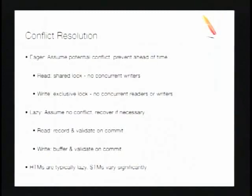To implement transactional memory — focusing on software TM but this applies to hardware too — you need to implement conflict resolution. There are two basic strategies. The first is eager, where the system assumes a potential conflict and wants to prevent it ahead of time by acquiring a lock to prevent concurrent readers or writers. The other is lazy conflict resolution, where you assume no conflict and recover if necessary, recording what you did and validating at the end that the reads and writes were correct. Hardware TMs are typically lazy, but STMs have the advantage of varying significantly based on application characteristics.